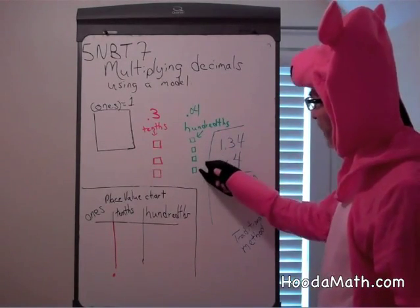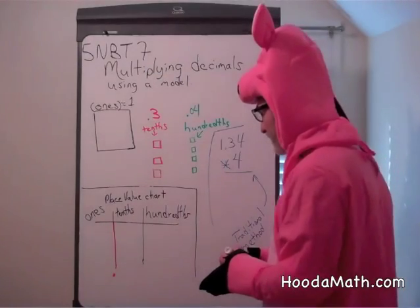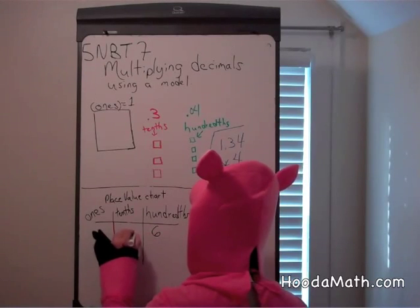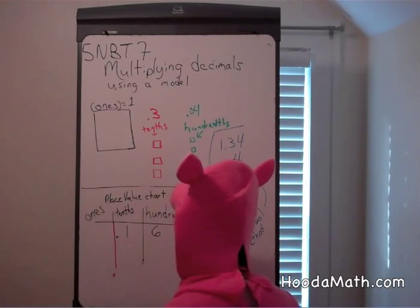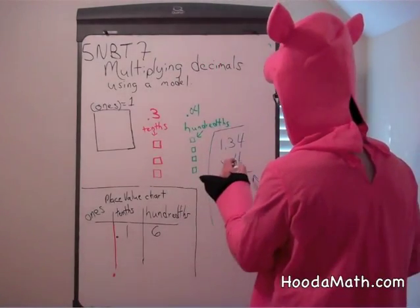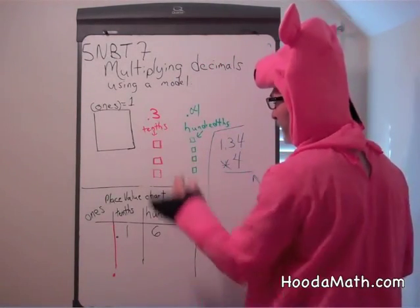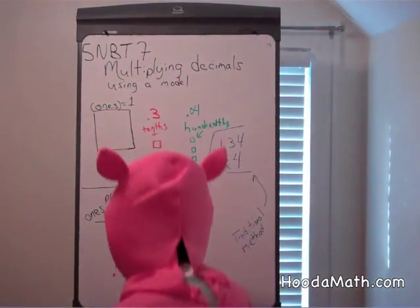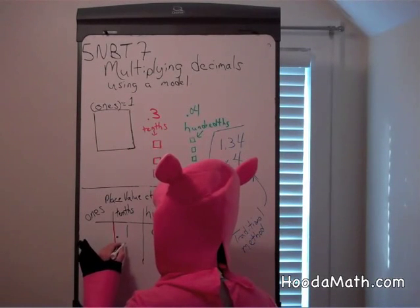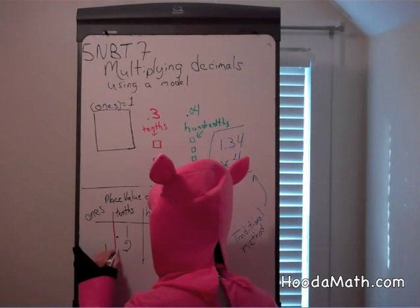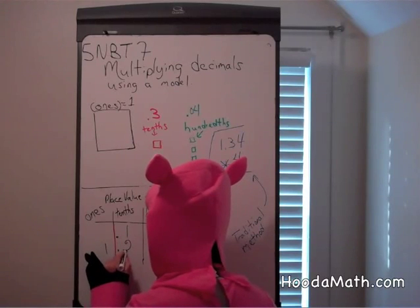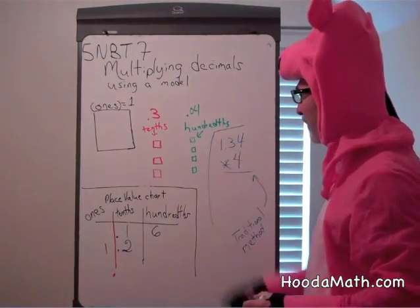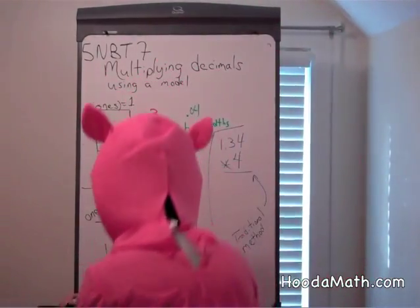Four times four hundredths would give us sixteen hundredths. Four times three tenths would give us twelve tenths. And finally, four times one would give us four ones.